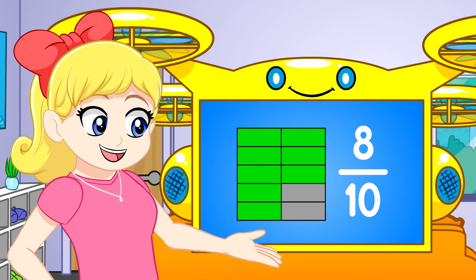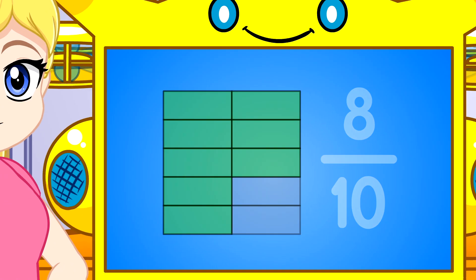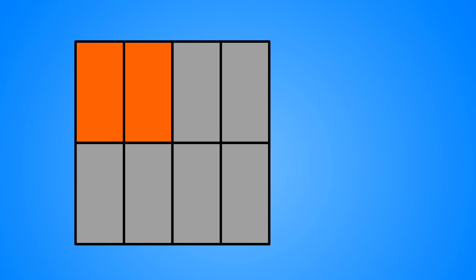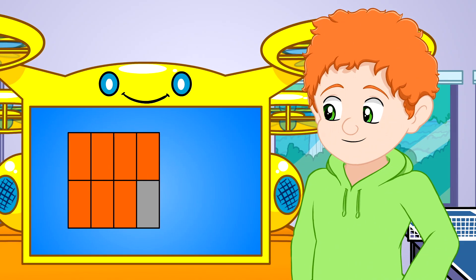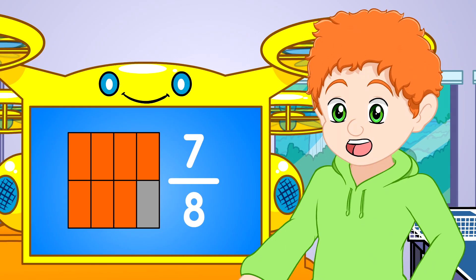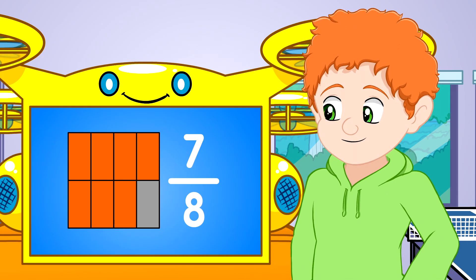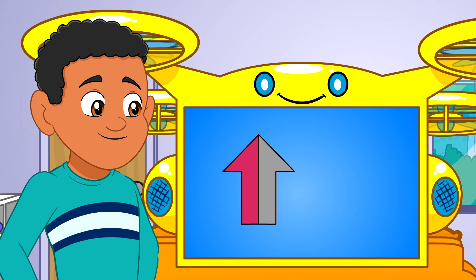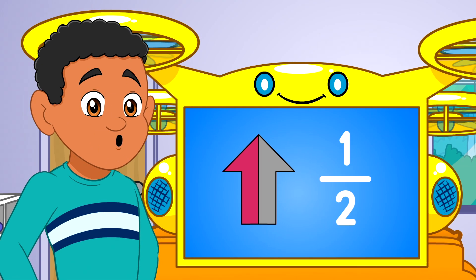Eight-tenths of the square is in color. Seven-eighths of the square is in color. One-half of the arrow is in color.